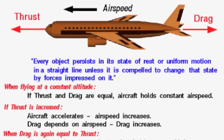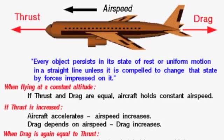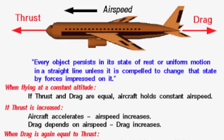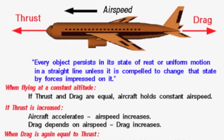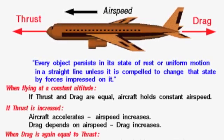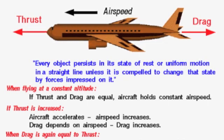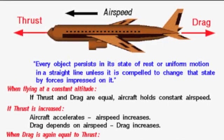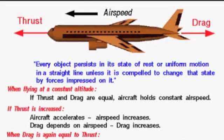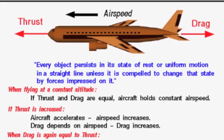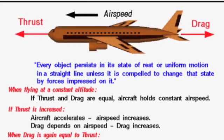Newton's first law states that any object at rest will stay at rest, or any object in motion will move at a constant velocity unless acted upon by an external force. This simply means that an object will maintain its current action unless another force acts upon it.